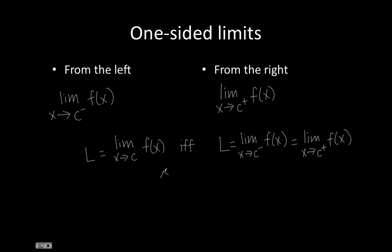So an example would be a function like this, and this is the point c we're talking about. We know that the limit as x approaches c is equal to L, because the limit as x approaches c from the left side is the same as the limit as x approaches c from the right side.